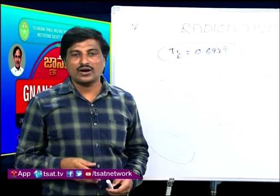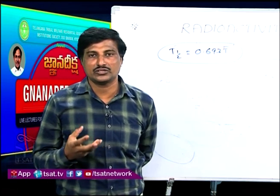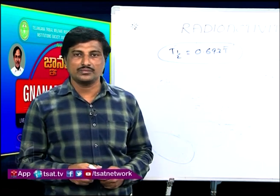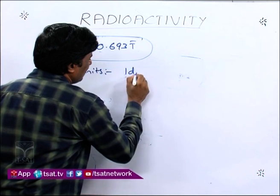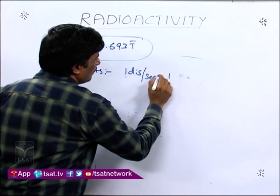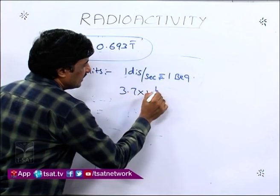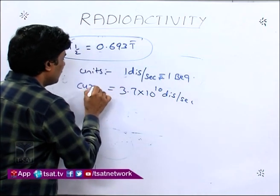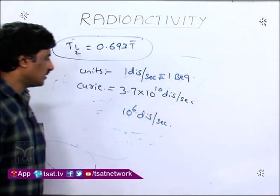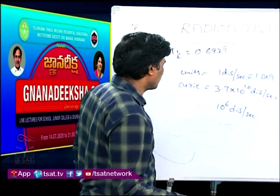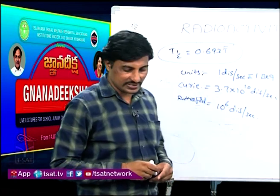What are the units of radioactivity? The units are named after the scientists who discovered radioactivity. One disintegration per second equals one Becquerel. Next, 3.7 × 10¹⁰ disintegrations per second is called one Curie. And 10⁶ disintegrations per second is called one Rutherford. These are the units of radioactivity.